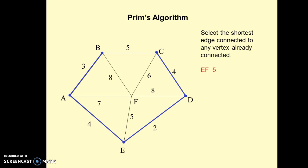So now the active nodes are B, A, E, D, and C. In the same process, we will find out which edge has the minimum weight. We find that EF has minimum weight, that is 5, so we will choose EF.